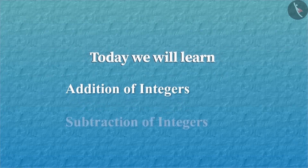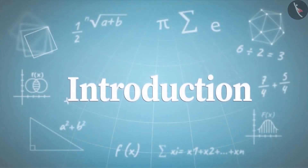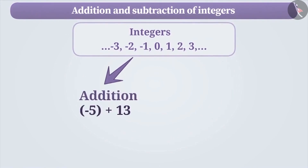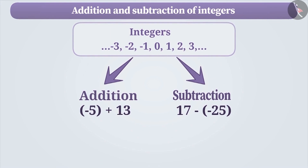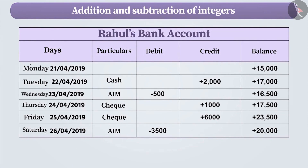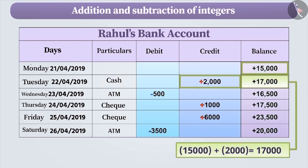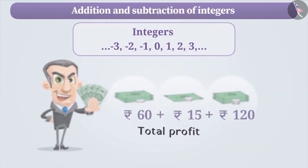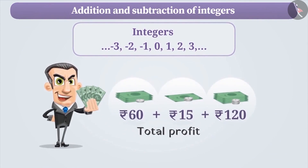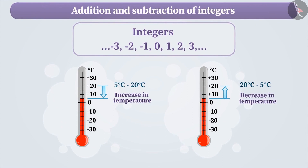Today, we will learn about addition and subtraction of integers. Understanding the addition and subtraction of integers is useful in many situations in our daily life. For example, look at Rahul's bank account. Here, amount credited is expressed with a positive sign and amount debited is expressed with a negative sign. To find the balance, we need to add the balance amount with the debited or credited amount. In this way, addition and subtraction of integers can be used in many situations like finding the total profit, recording the increase or decrease in temperature, etc.